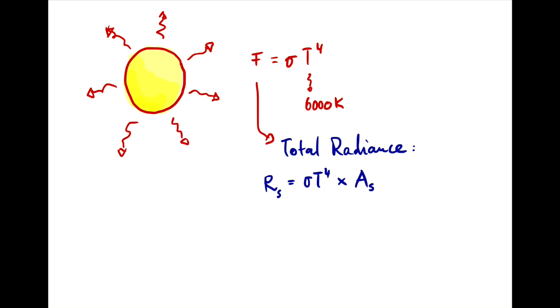And the surface area of a sphere is 4 pi r squared. So this would be sigma T to the 4 times 4 pi r_s squared,